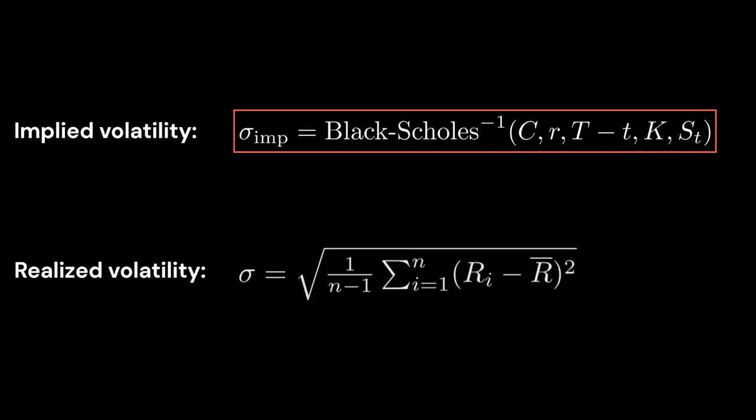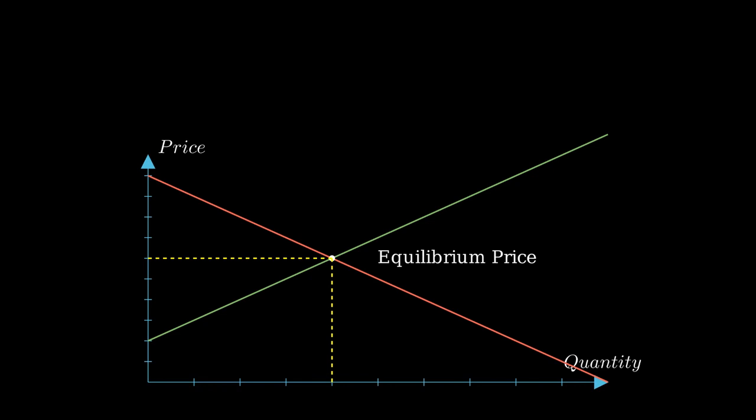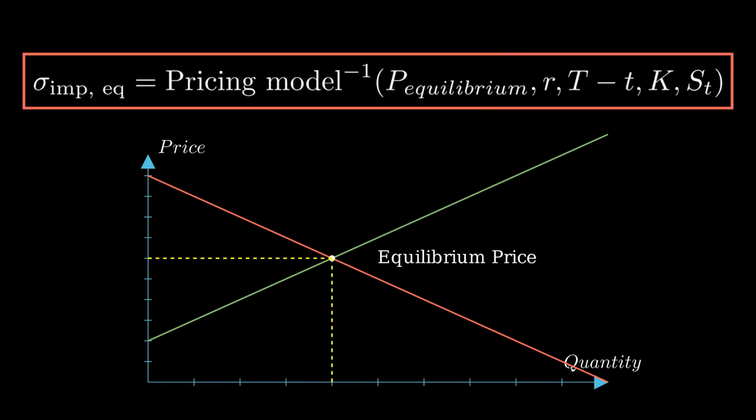Implied volatility is a reflection of the option price. It is sometimes considered that the price observed on the markets corresponds to the equilibrium price for an asset. This price corresponds to the consensus between buyers and sellers. So, as with prices, there is an implied volatility equilibrium for options.